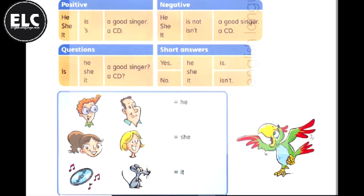He is a good singer. He is an A part. She is an A part. And she is an A part. It's an A part.